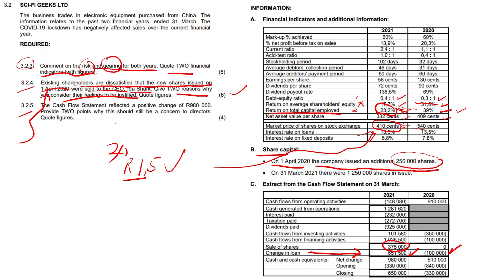Question 3.2.5: the cash flow statement reflected a positive change of 980,000. Let's find that — negative 330,000 last year turned to positive 650,000 this year. Adding those two numbers: 330 plus 650 gives you that 980,000. Now at first glance that looks absolutely marvelous — they've generated almost a million rands extra over one year.